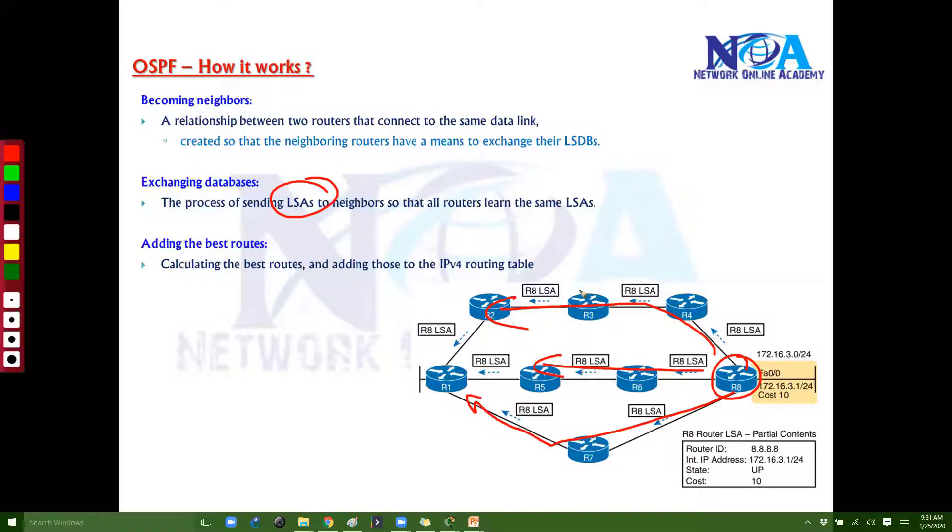Again, the best route is calculated based on the metric as I said. There is a separate formula for that. We'll talk about that in a metric section later on. This best route will be installed in the routing table.